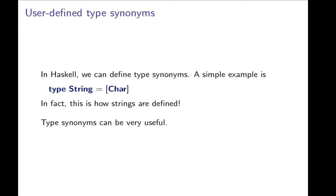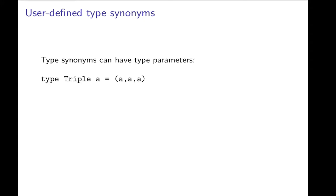Type synonyms can be very useful. We can use type synonyms to make programs more readable. If we want a type that is the Cartesian product of A with itself and itself, we could define a type synonym triple of A, where A is any type, to be triple A, which is A, A, A.